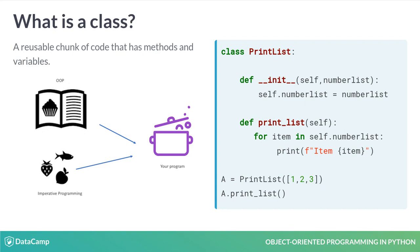What is a class? It's a reusable chunk of code that has functions and variables. As we reviewed in the previous section, we'll want to use OOP when we create groups of code that have both variables and functions we want to reference. Much like a recipe helps us plan how to actually cook our meal, classes will allow us to create our work easily. You may remember back to section 1 where we created a sample class that allowed us to create the same list every time.